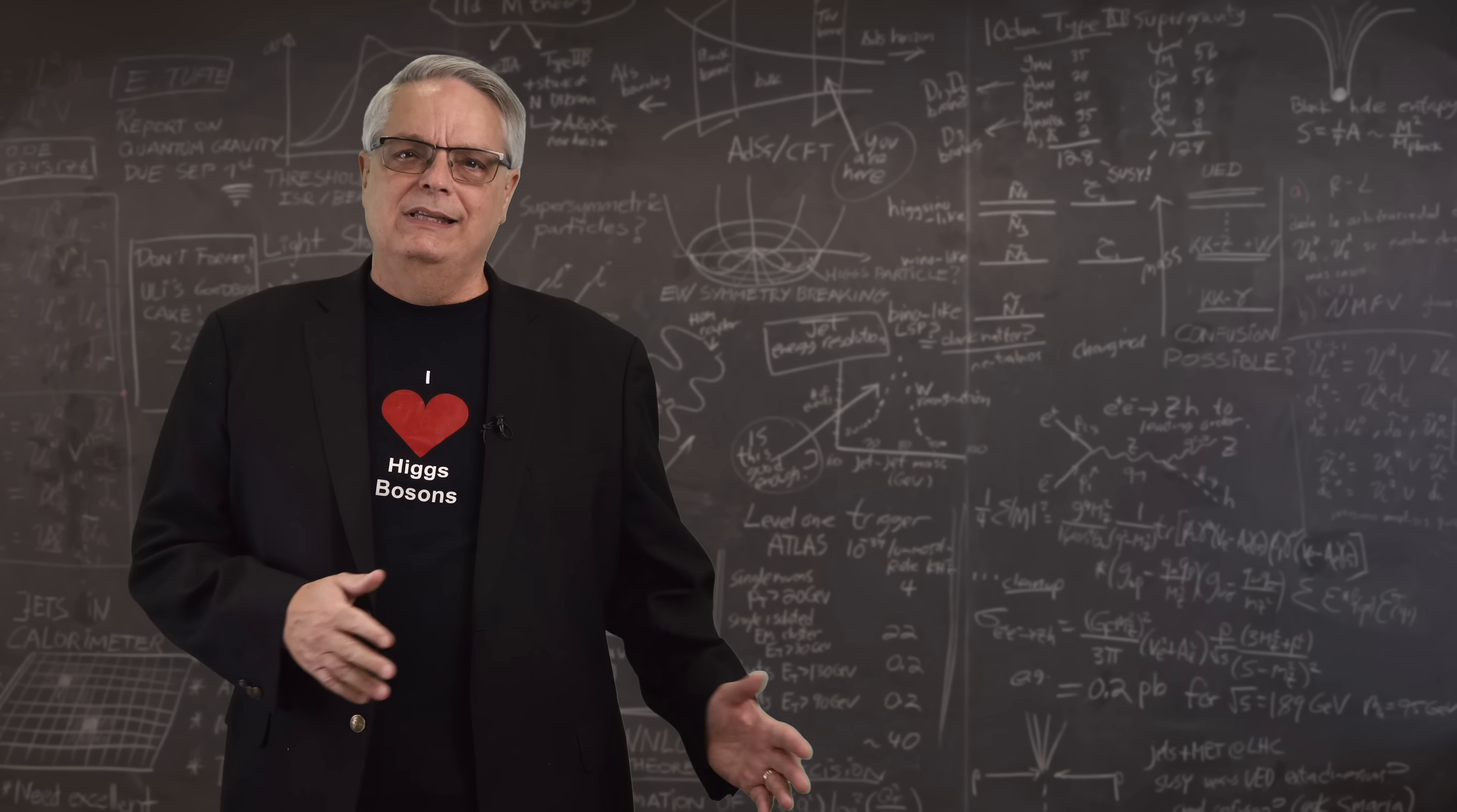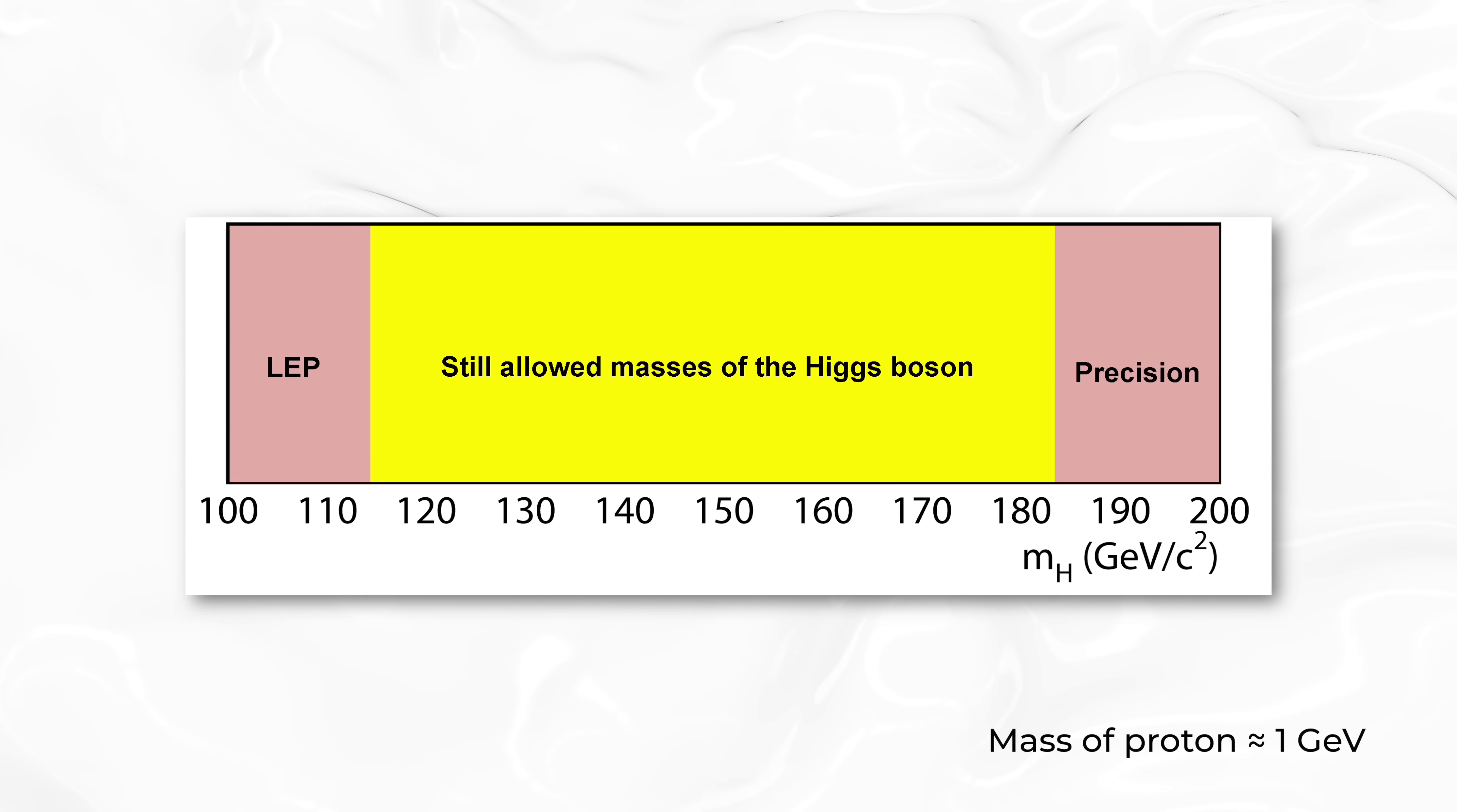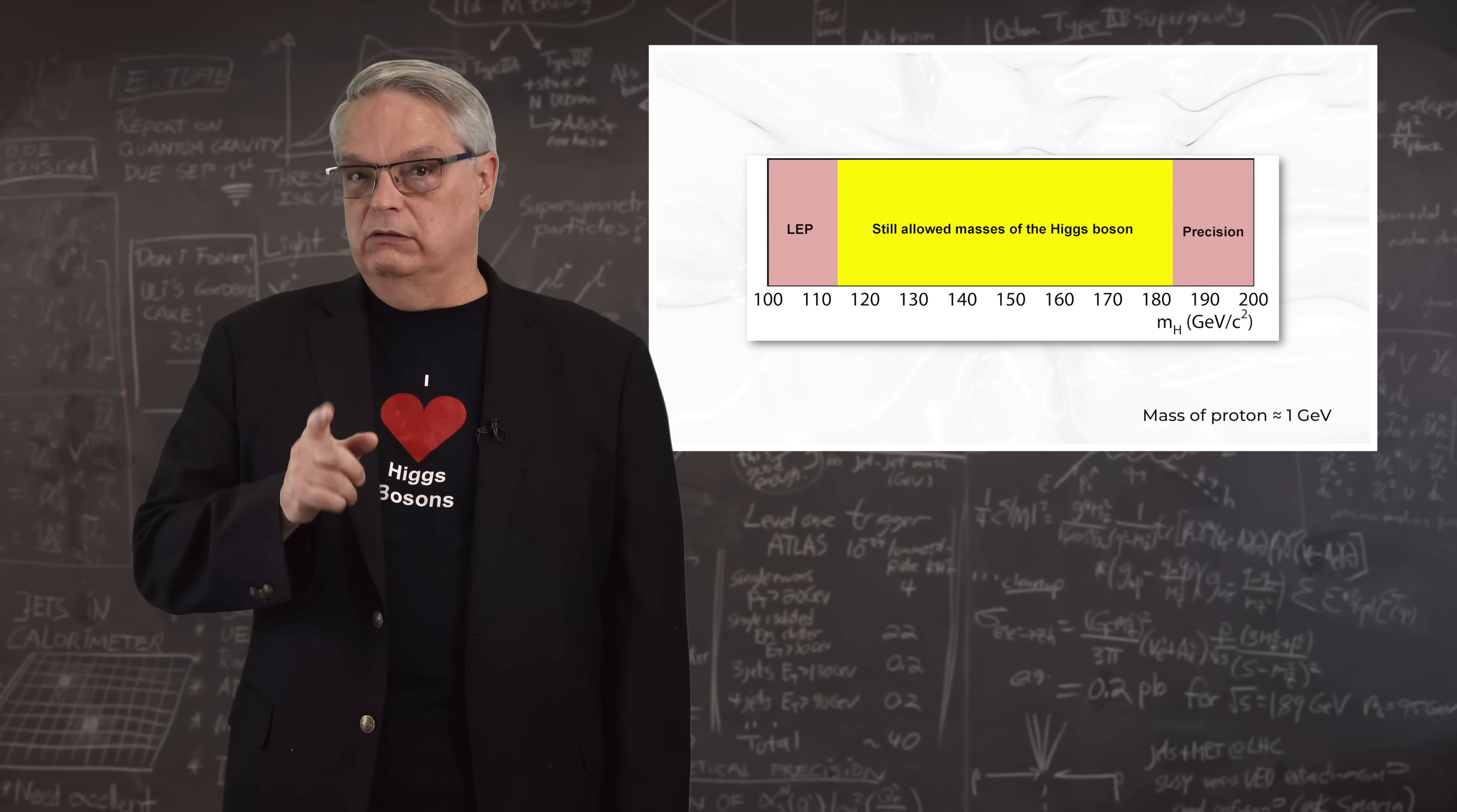The Tevatron ran from the mid-1980s through 2011, but it was in 2000 that things got interesting. Remember that we didn't know if the Higgs boson really existed, and if it did exist, we didn't know what its mass was. The LEP measurements ruled out masses under 114 times as heavy as a proton, and some precision measurements ruled out a mass higher than about 185 times as heavy as a proton. In this picture, and in all others, the yellow is the range of masses where the Higgs boson could still exist.